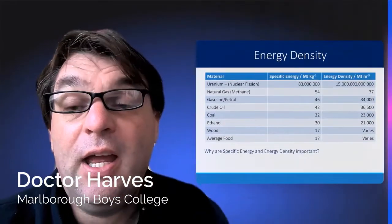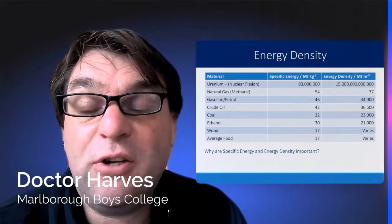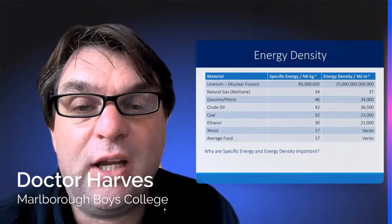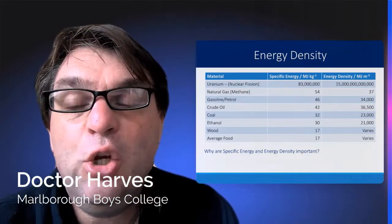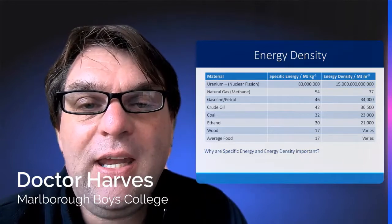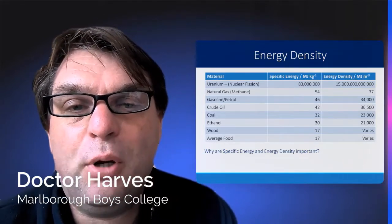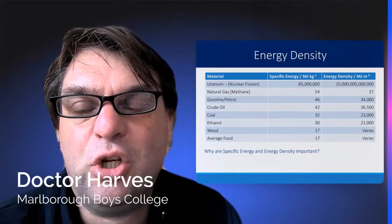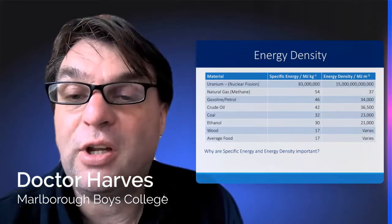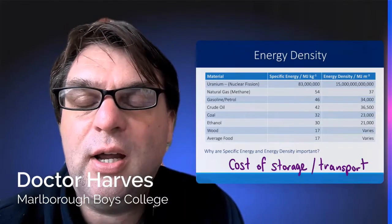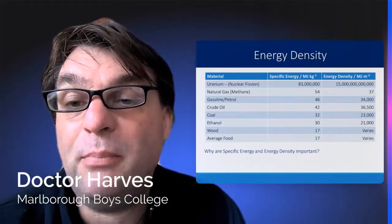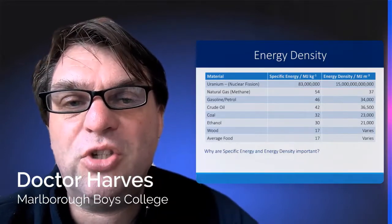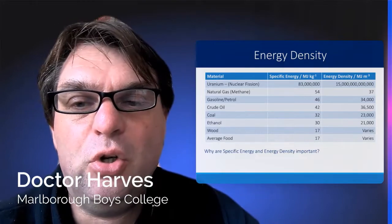Looking at different ways that we get energy — like eating a sandwich, or getting coal or petrol for your vehicle — you can clearly see that Uranium releases the most energy per kilogram and also the most energy per metres cubed by a large margin. But you also have to consider storage and transport, which become factors when considering what's the best energy source to use.